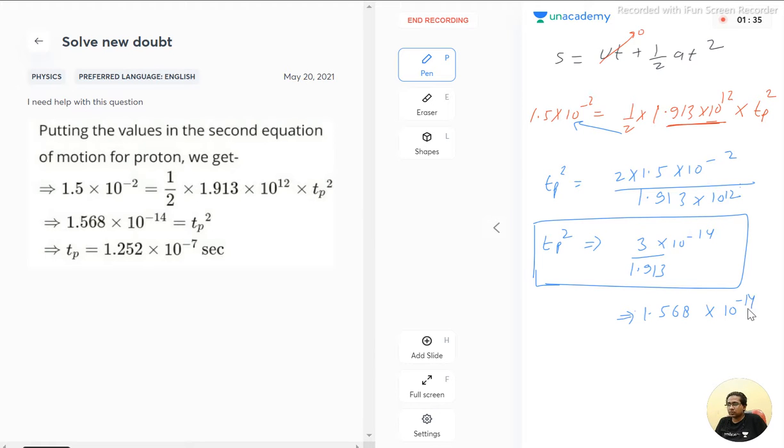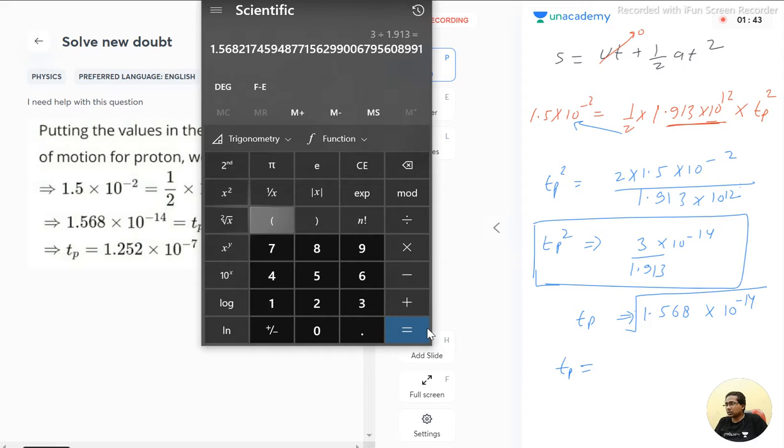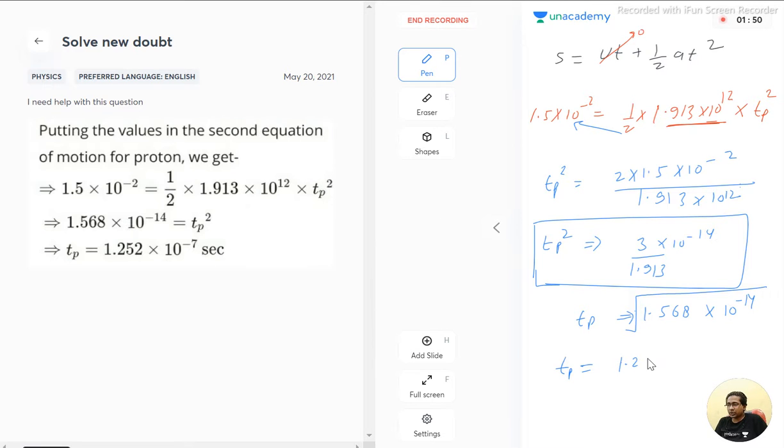Let's take the entire root of this. So the value of tp is basically the under root of this thing. The under root of 1.568 is equal to 1.252, multiplied by 10 raise to the power minus 7 second, because time is given in seconds.